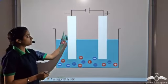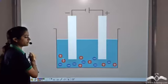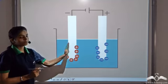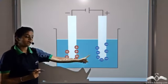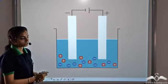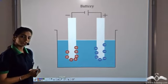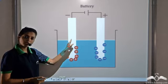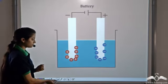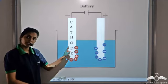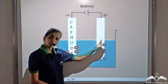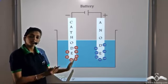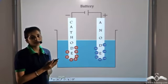The two electrodes are connected to the battery. When we have cations and anions in solution, the positively charged cations migrate towards the negatively charged electrode, which is known as the cathode. The anions migrate towards the positively charged electrode, which we call the anode. So the cations migrate towards the cathode and the anions migrate towards the anode.